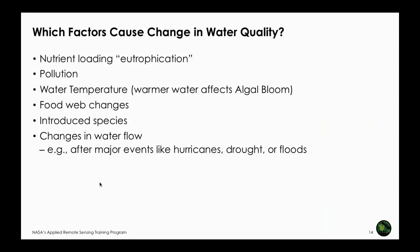A number of factors cause changes in water quality: nutrient loading or eutrophication, pollution, and water temperature — warmer water is more conducive to algal bloom. Food web changes, introduction of new species into a water body, and changes in water flow are also major causes. Runoff going into a water body can change because of hurricanes, droughts, or flood events, and that changes water quality.